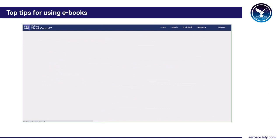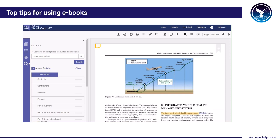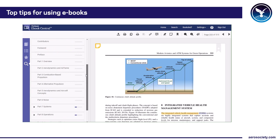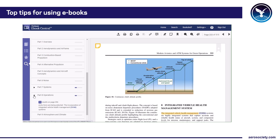I also quite like the panel on the left-hand side, because if you go down there you can actually see which sections of the books discuss IVHM. So you can go to the operations section and it'll bring up relevant content there too — the same goes for the systems section.